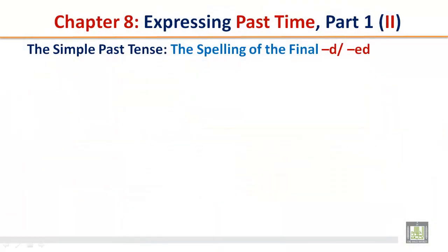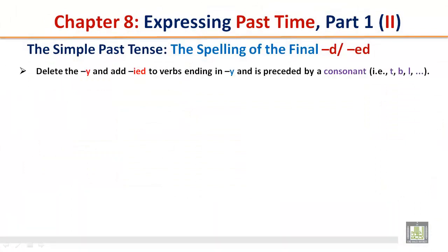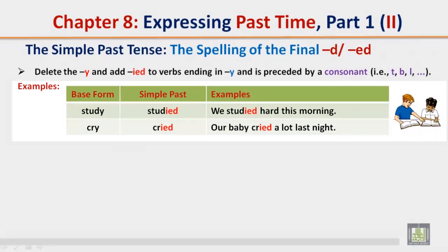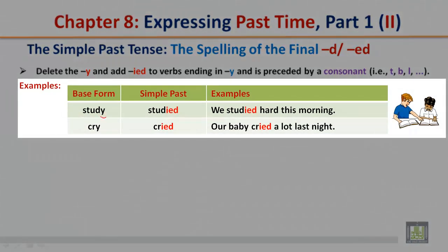The simple past tense — spelling of the final d or ed. Delete the y and add ied to verbs ending in y that is preceded by a consonant. Base form: 'study' — it ends in y, and d is a consonant, so you delete the y and add ied. Example: 'We studied hard this morning.' Similarly, 'cry' → 'cried'. Example: 'Our baby cried a lot last night.'